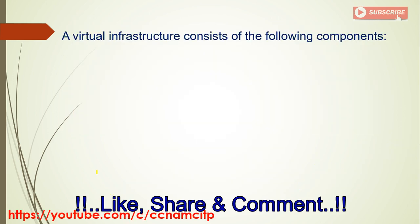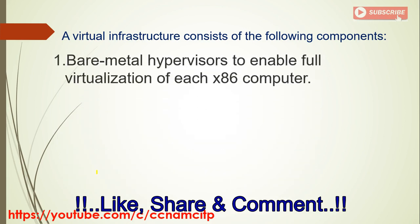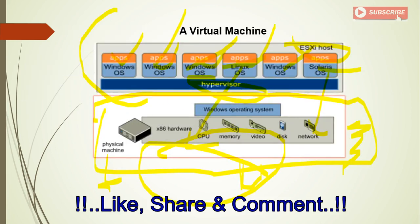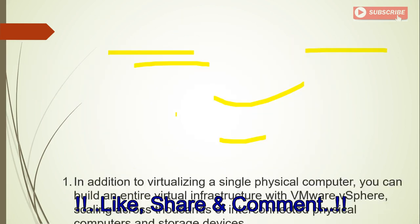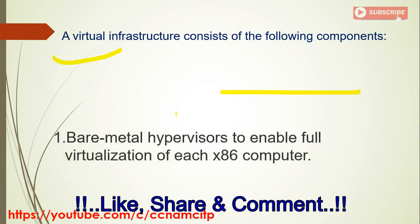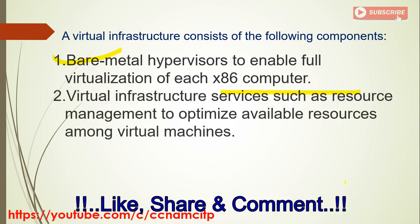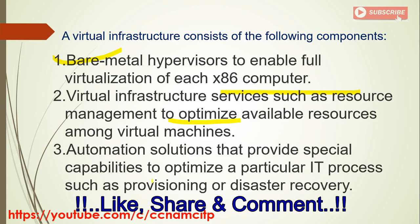A virtual infrastructure consists of the following components. First, bare metal hypervisor — installed on each physical computer to enable full virtualization and allow you to create and run virtual machines. Second, virtual infrastructure services such as resource management to optimize available resources among virtual machines. Third, automation solutions that provide special capabilities to optimize particular processes such as provisioning or disaster recovery.